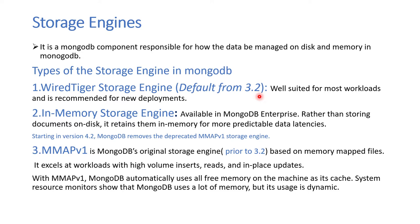The second storage engine is available in MongoDB Enterprise edition. It keeps everything in memory rather than on the disk, which makes it very fast by design.